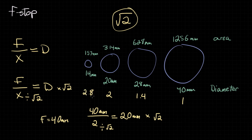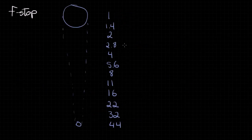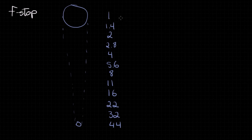So even though the f-stop numbers seem kind of random, they're really not. They're just being divided or multiplied by the square root of 2 depending on whether you want double or half the light. Here's the f-stop scale — every point represents double the amount of light compared to the f-stop number below it. As the diameter gets bigger and bigger, the f-stop number gets smaller and smaller. So the small f-stop numbers represent larger apertures, and the larger f-stop numbers represent smaller apertures.